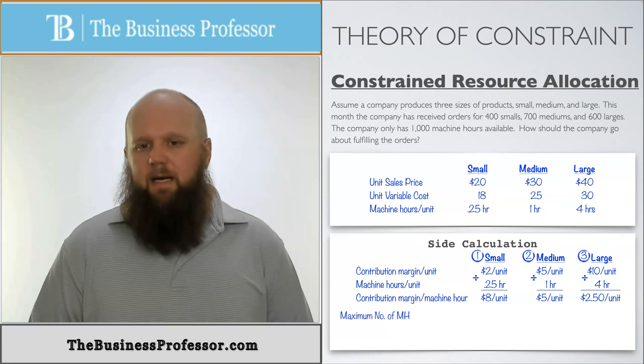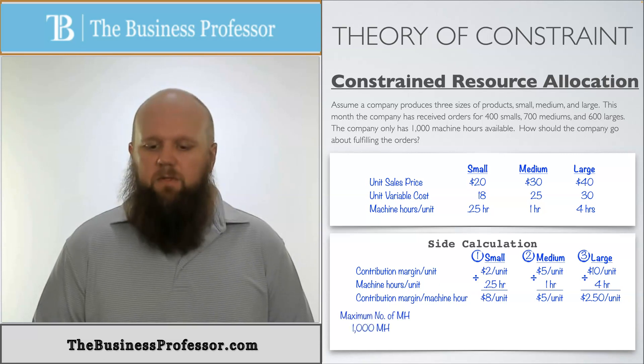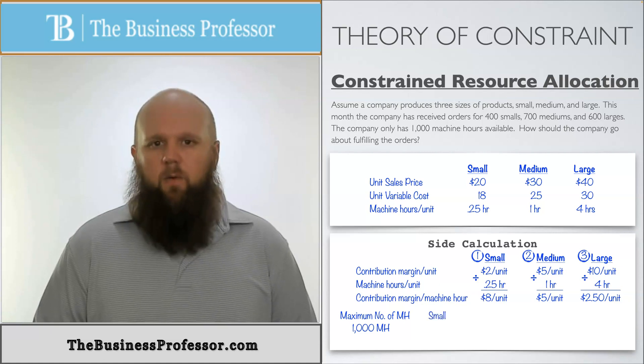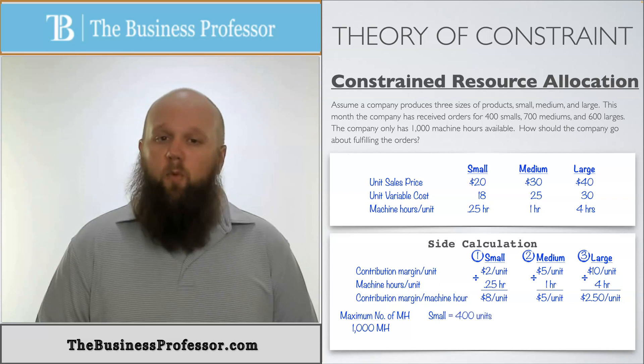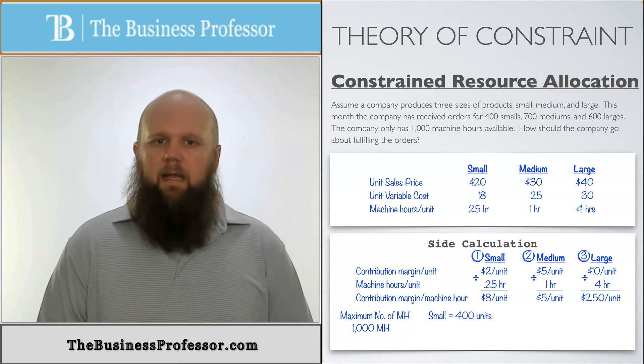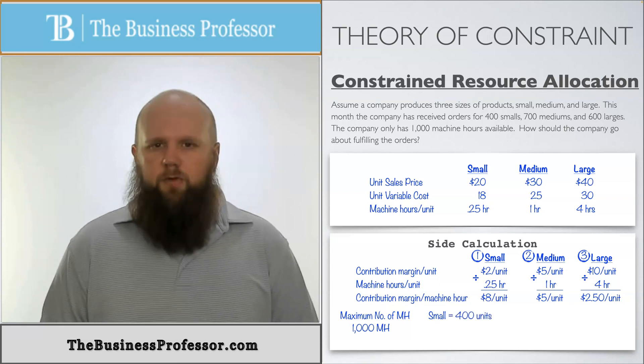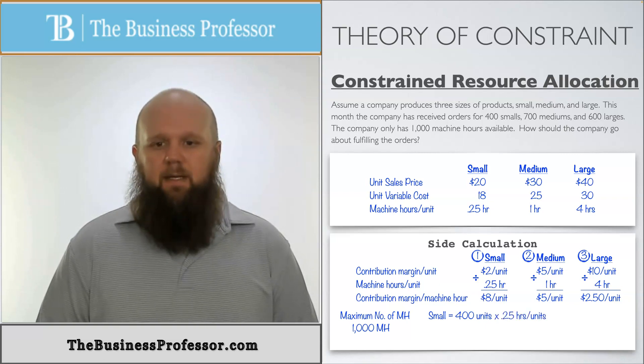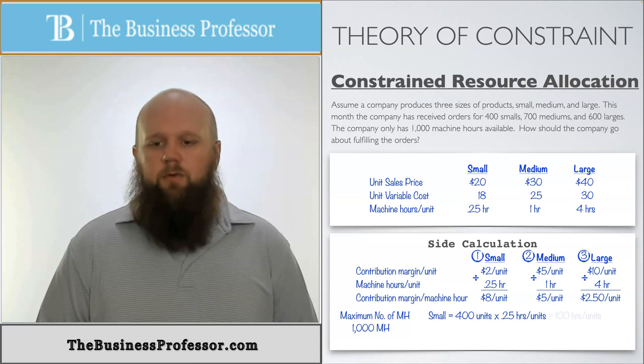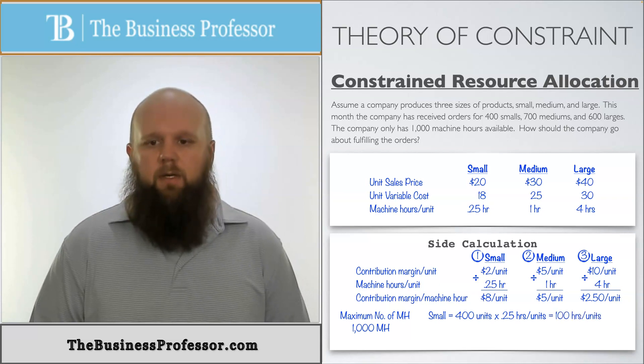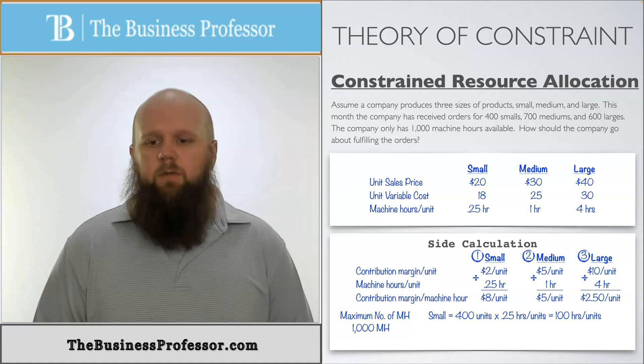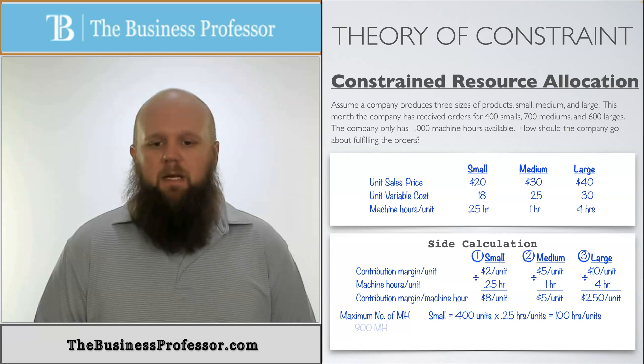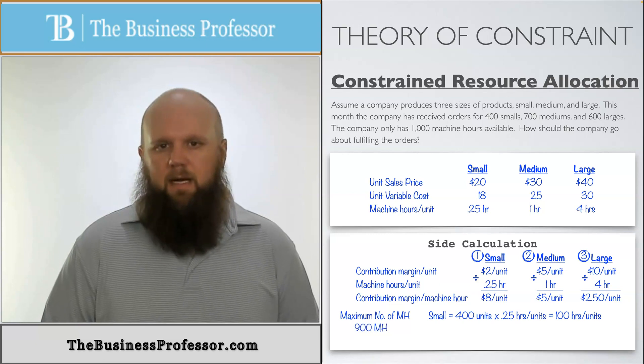Well, we have a maximum number of machine hours of 1,000. We know that it's given to it. So again, first we're going to start with small. So of the small, we know we have an order of 400. And remember, we're not going to produce more even though it gives us $8 per machine hour. We're not going to produce more than it's ordered. So 400 units times the 0.25 hours per unit it takes to produce. That means I'm going to use 100 hours total for this order. So take the 100 out of the 1,000. I'm left with 900 machine hours to use.